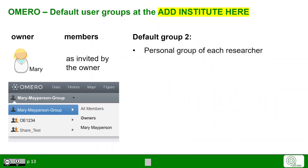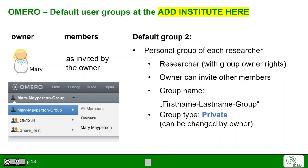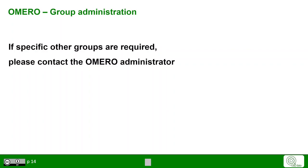Another example would be the personal group of each researcher, where the researcher himself or herself is the group owner. This group owner can then invite other members into the group. The group name in this case would be the first name and last name followed by 'group.' This is used in the private permission level setting and can be changed by the researcher. This default group would allow any individual researcher to have collaborations across their own research group without having other members and their data in the same group. If specific collaborations require specific groups, you can typically contact the OMERO administrator.